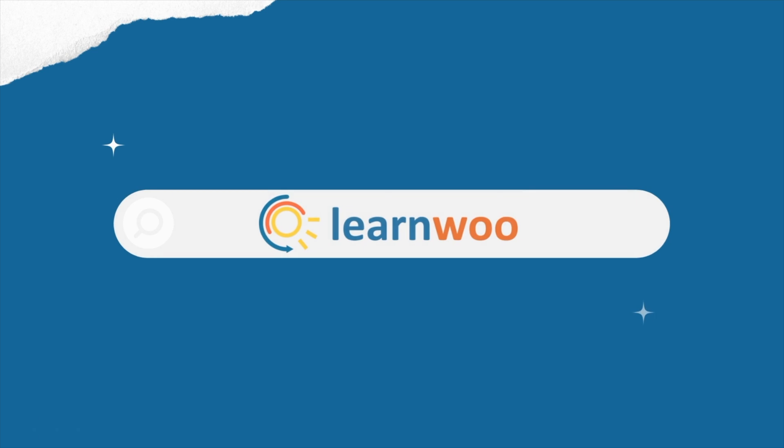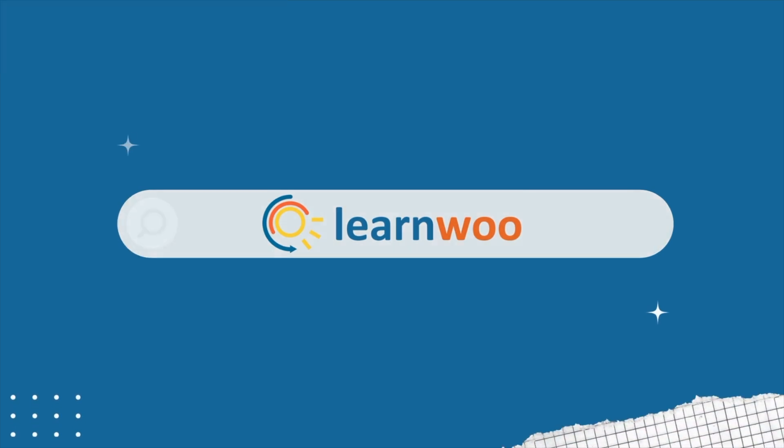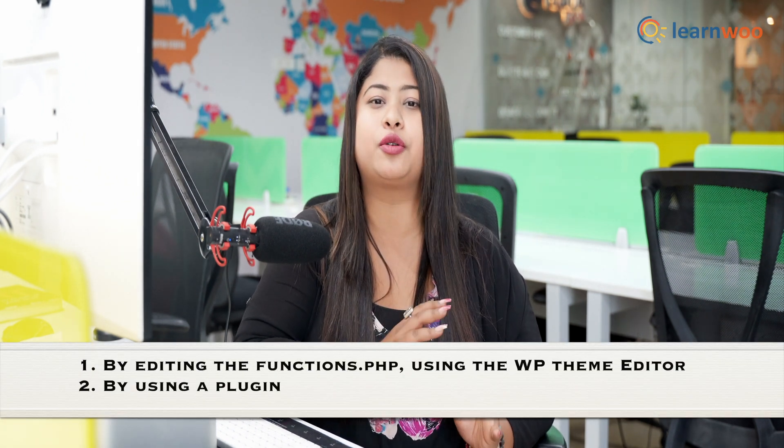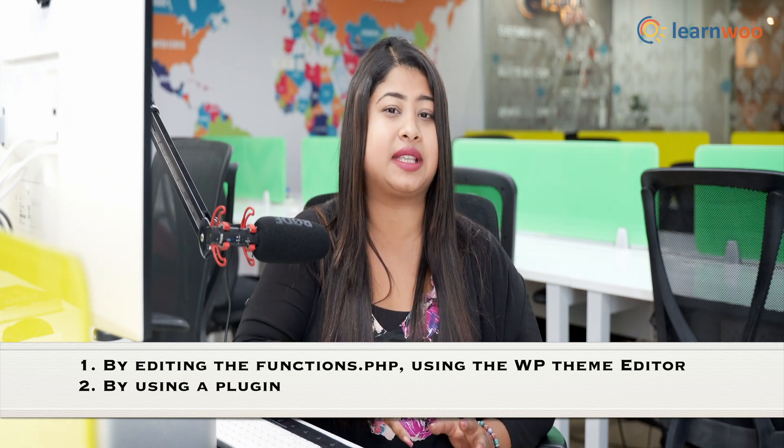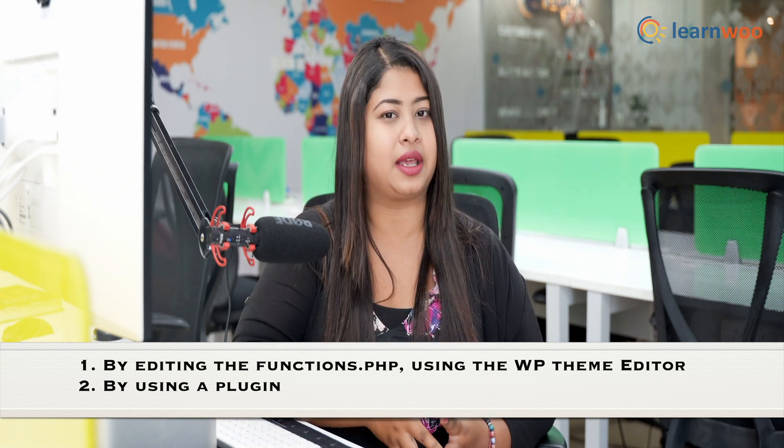I'm Aparna Singh from LearnVu, and let's get started. For adding a code snippet to the WordPress site, we will be using two different ways: first is by editing the functions.php using the WordPress Theme Editor, and second is by using a plugin.